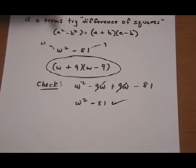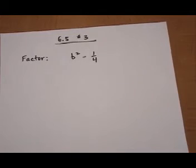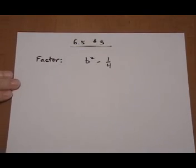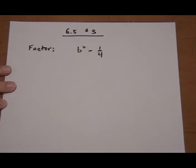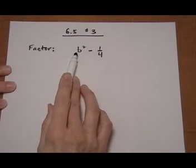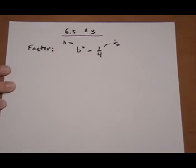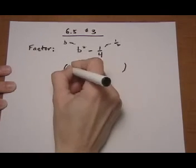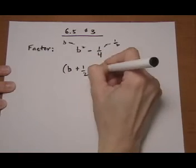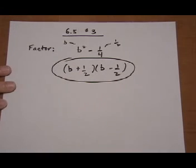Let's try another one. This is 6.5 number 3. I want to factor B squared minus 1 quarter. I check: perfect square, yes. Perfect square, yes — because the square root of 1 quarter is 1 half, and the square root of B squared is B. So I can use difference of perfect squares since they are being subtracted. The answer is B plus 1 half, times B minus 1 half.